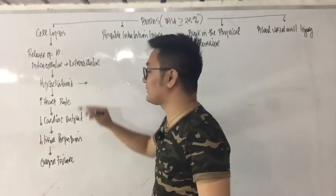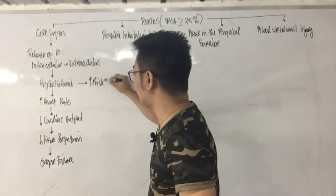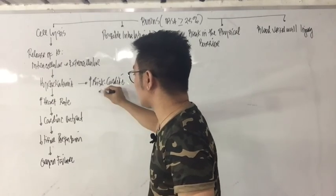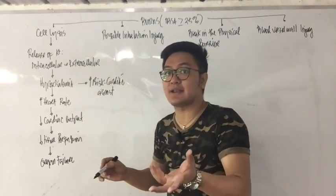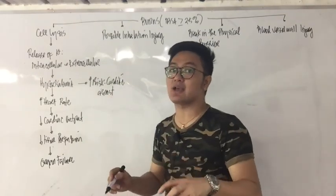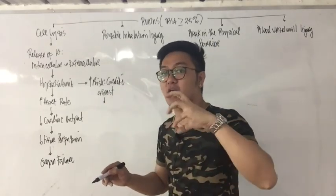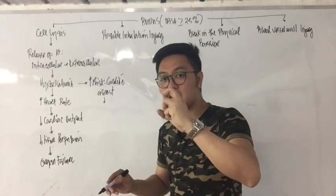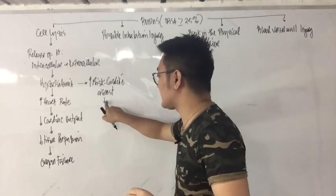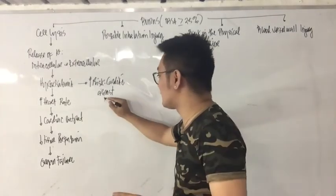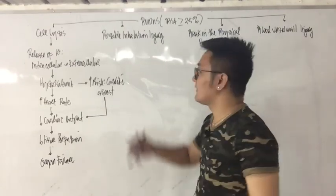An increase in blood potassium — hyperkalemia — will also increase the risk of cardiac arrest. We cannot give potassium chloride in bolus or high concentration because it causes cardiac arrest. Cardiac arrest means cessation of heartbeat; there is no heart contraction, resulting in decreased cardiac output, which again leads to organ failure.